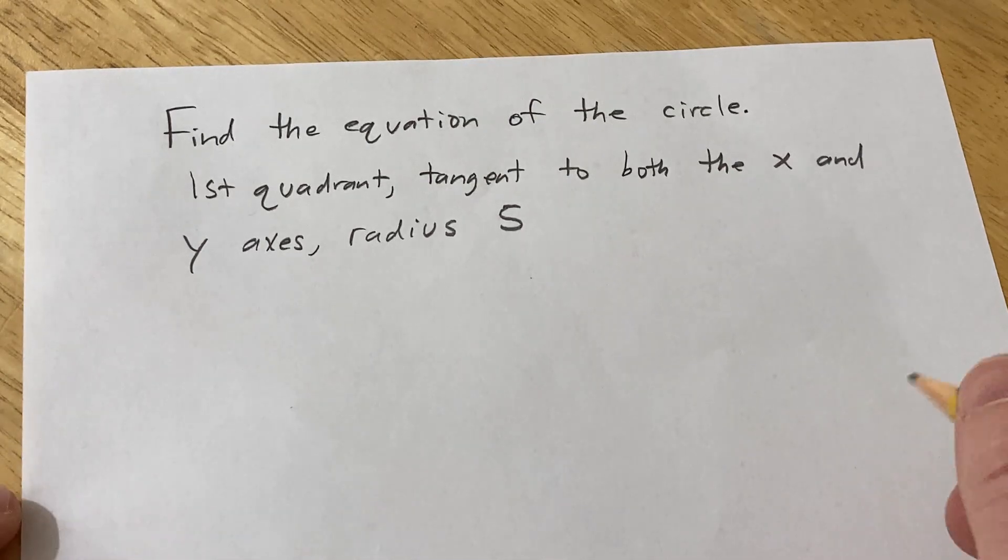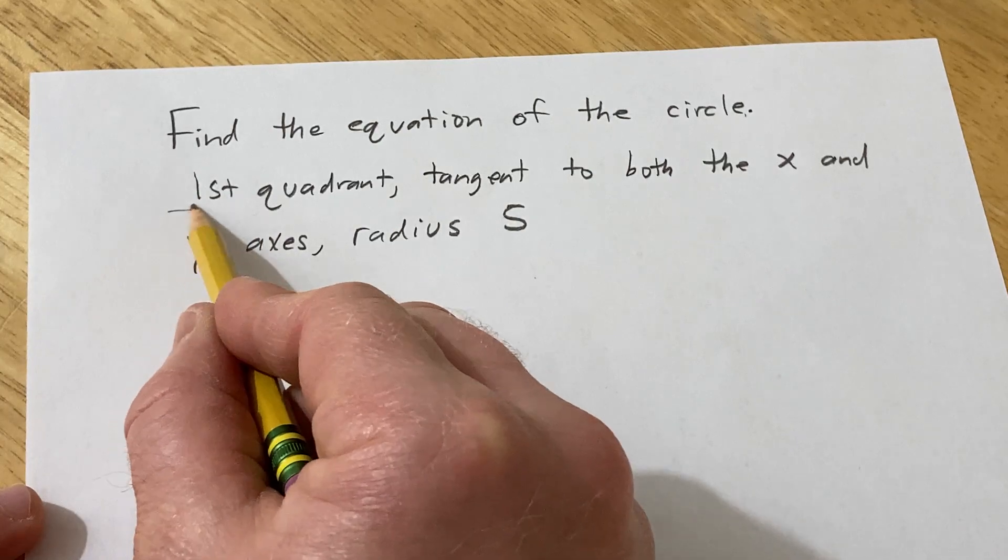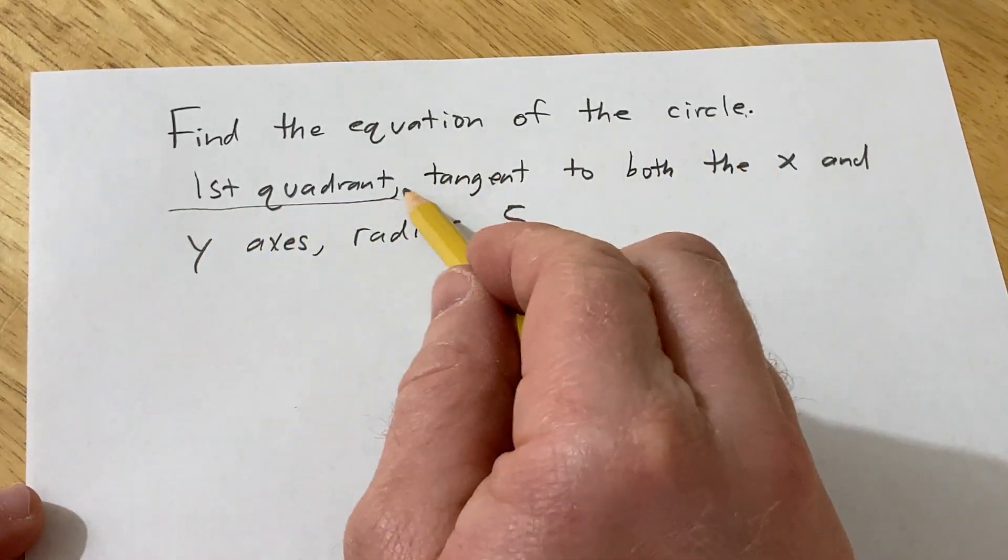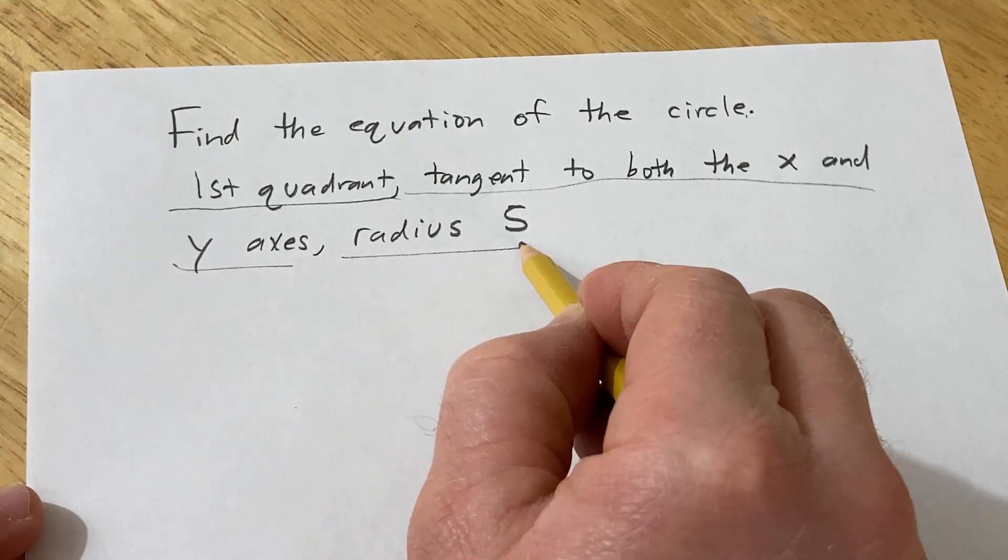Hello, in this problem we are going to find the equation of the circle. We know that the circle is in the first quadrant and it is tangent to both the x and y axes, and the radius is 5.